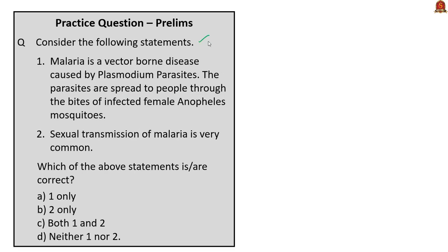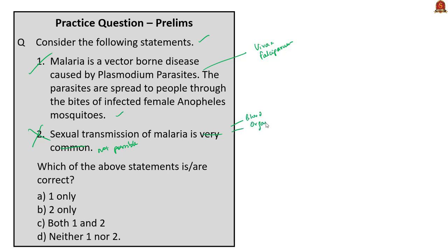Consider the following statements about malaria. The first statement is correct: malaria is a vector-borne disease caused by Plasmodium parasites, especially Plasmodium vivax and Plasmodium falciparum, spread through bites of infected female Anopheles mosquitoes. The second statement is wrong — sexual transmission of malaria is not possible. In rare cases, malaria can be transmitted through blood transfusion, organ transplant, or shared use of needles or syringes contaminated with blood. The correct answer is option A, statement 1 only.